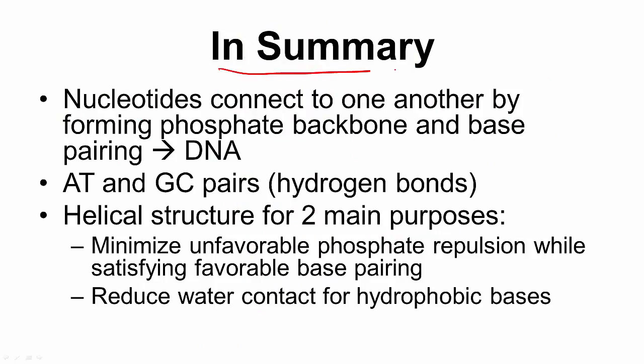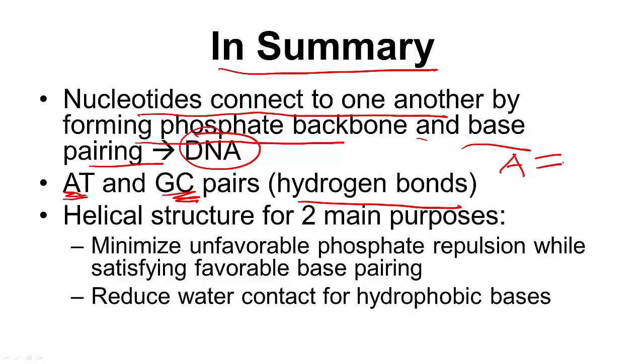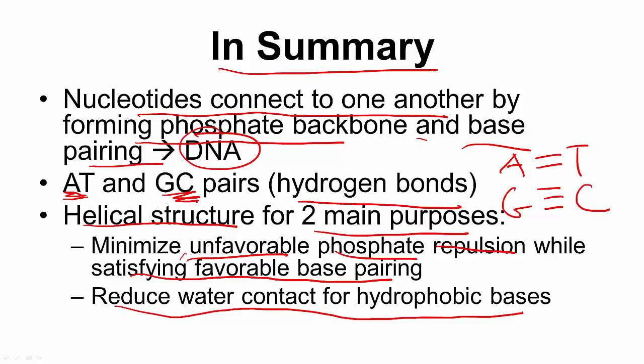And this brings us to our summary. So, what have we learned today? Well, we learned that nucleotides connect to one another by forming a phosphate backbone, and also by base pairing. And this is what forms the DNA. Now, this base pairing themselves involves AT and GC pairs through hydrogen bonds. And AT always has two hydrogen bonds, these pairs, while GC pairs always have three hydrogen bonds. And lastly, we learned that DNA adopts a helical structure, and it's for two main purposes. Number one, it minimizes the unfavorable inter-phosphate repulsions, because the backbone is so negatively charged. While at the same time, it satisfies the favorable base pairing in the middle. And finally, the helical structure reduces the water contact for the hydrophobic bases in the middle, because the surface area is being reduced.